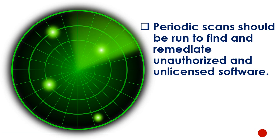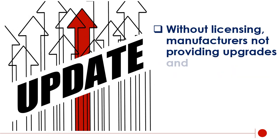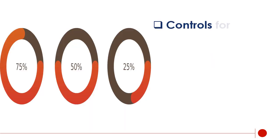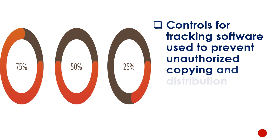Without licensing, manufacturers will not provide upgrades and updates. Controls for tracking software are used to prevent unauthorized copying and distribution.